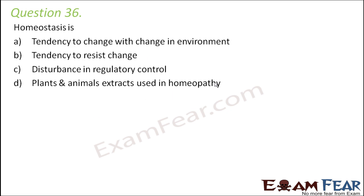Question 36: homeostasis is — tendency to change with change in environment, tendency to resist change, disturbance and regulatory control, or plants and animals extracts used in homeopathy? Homeostasis is basically the ability of a body to maintain a condition of equilibrium within its internal environment. For example, our normal body temperature is approximately 98.3 degrees Fahrenheit. When the weather is very cold outside in peak winters, your internal body temperature still remains the same — still 98.3 degrees Fahrenheit.